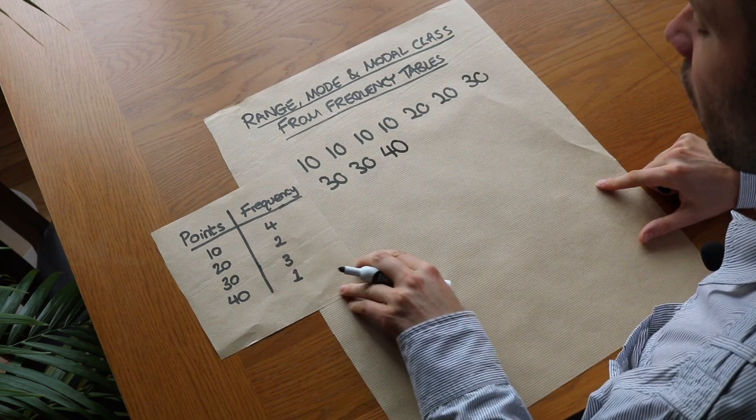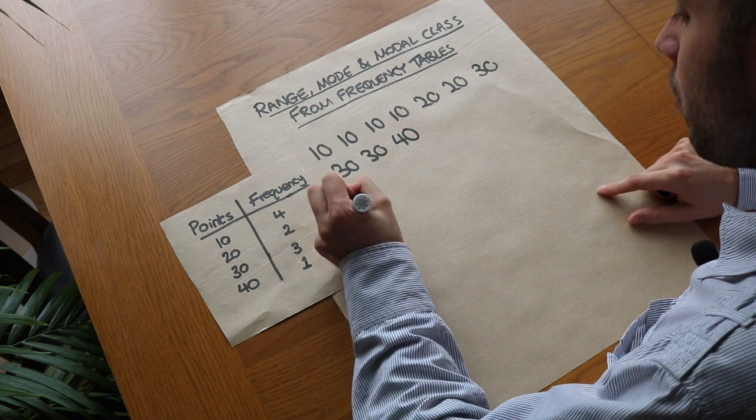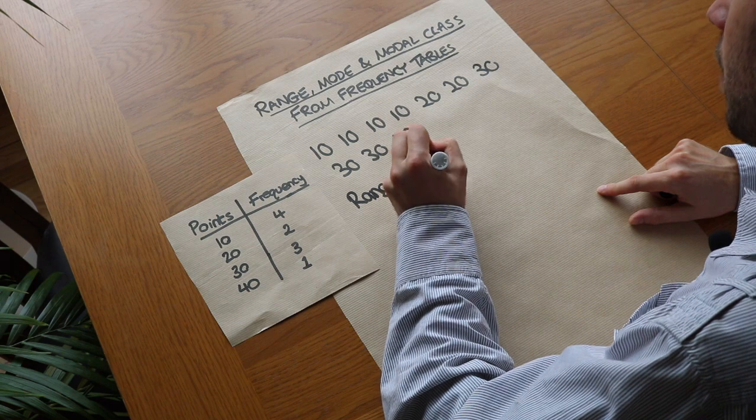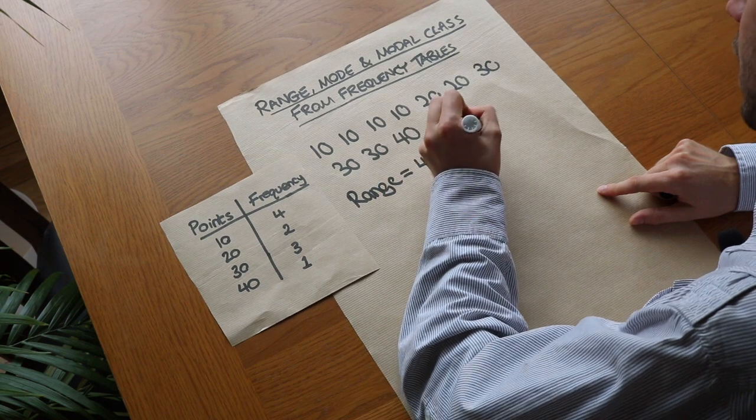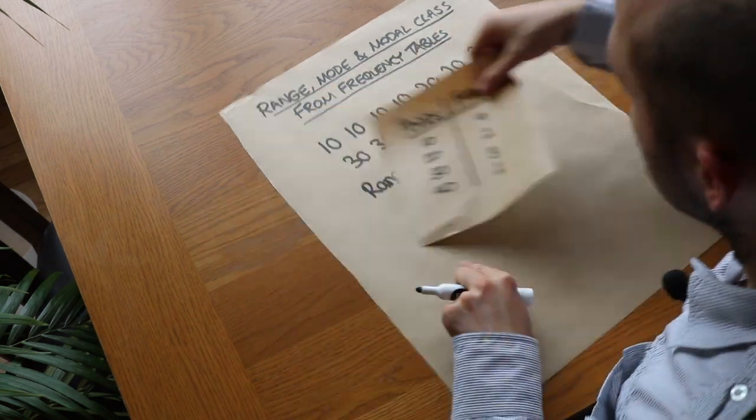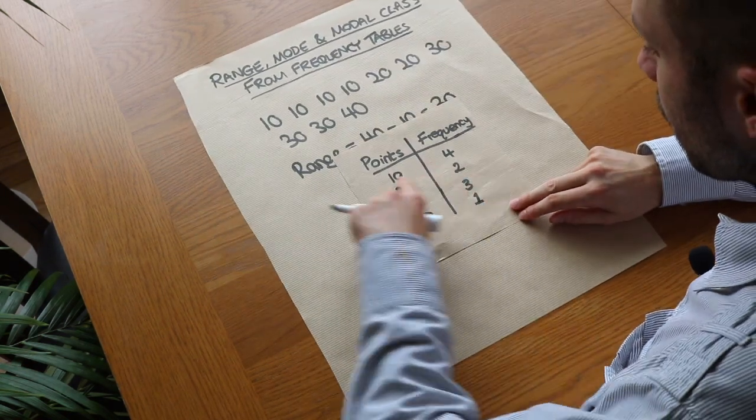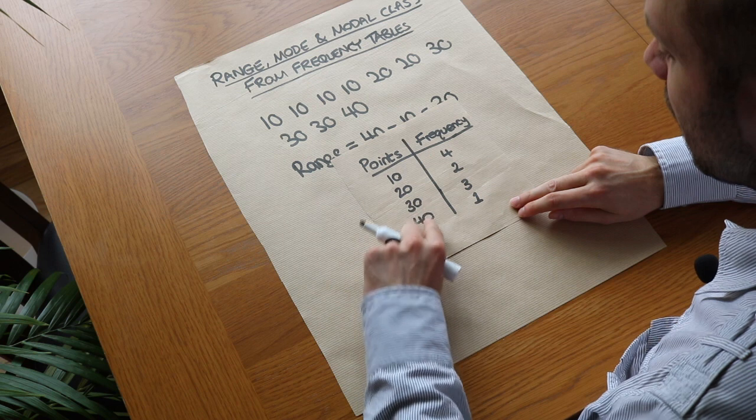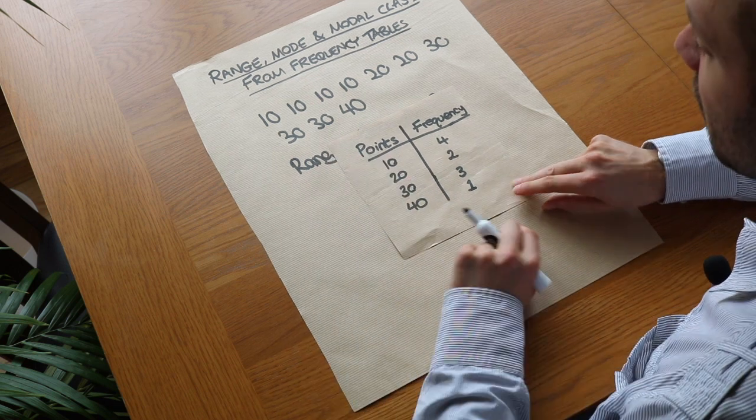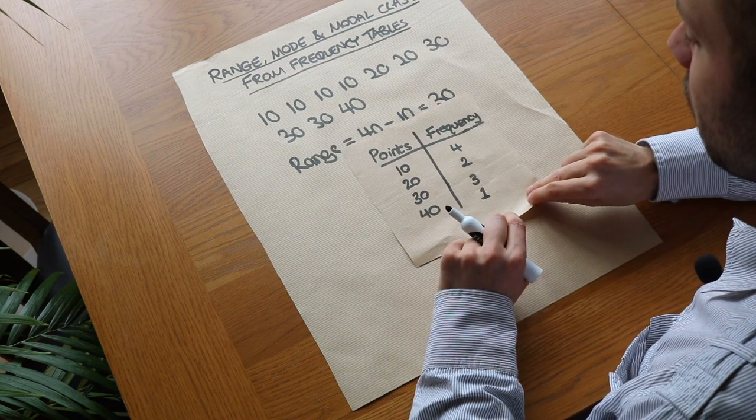And then let's just say I wanted to find the range of these values. We know the range is just the maximum value of 40 minus the minimum value of 10, which is equal to 30. But can you see that we don't actually need to list out these values? We can see that the lowest value from this table was 10 and the highest value was 40, so we can immediately do 40 minus 10 to get the range without listing these values out.